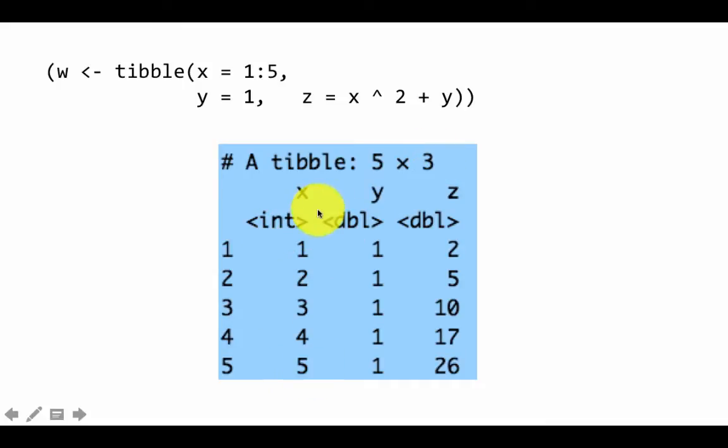What results is a 5 by 3 tibble because you have 5 rows and 3 columns. X being 1 to 5 is no surprise. Y we said is 1, but since x requires 5 values, it automatically extends it to 5 ones. And here it computes, since y is now 5 ones, x squared plus y. You see the results: 2 squared plus 1 is 5, 3 squared plus 1 is 10, 5 squared plus 1 is 26.